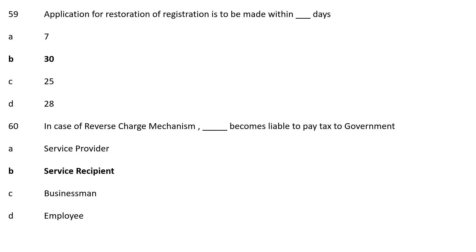MCQ No. 59: Application for restoration of registration is to be made within dash days. Option A: (not stated); Option B: 30; Option C: 25; Option D: 28. The correct answer is Option B, 30 days.